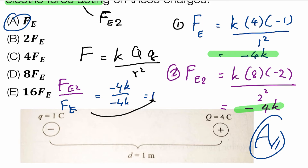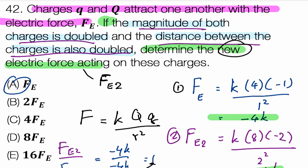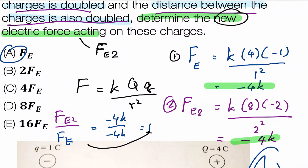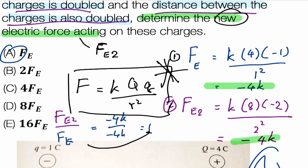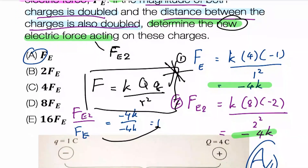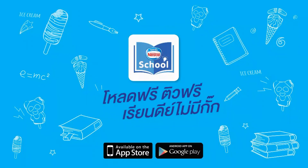We can see that the new electric force equals the original electric force Fe. The answer is Fe — that is the electric force, which we know. The difference between the new force and original force is very small — essentially equal. We're done!